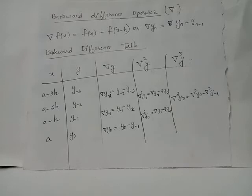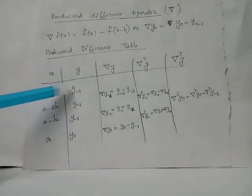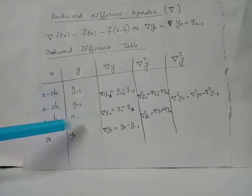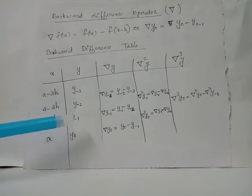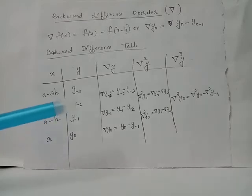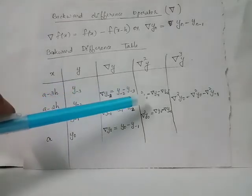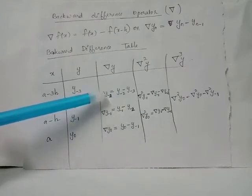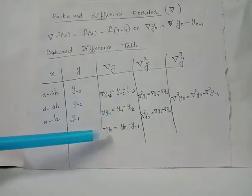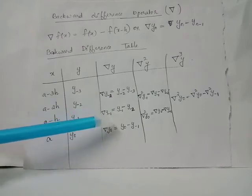Del y is the first backward difference. Del y_{-2} equals y_{-2} minus y_{-3}, written midway between those two values. Del y_{-1} equals y_{-1} minus y_{-2}, and del y_0 equals y_0 minus y_{-1}. For the second backward difference: del squared y_{-1} equals del y_{-1} minus del y_{-2}, and del squared y_0 equals del y_0 minus del y_{-1}.